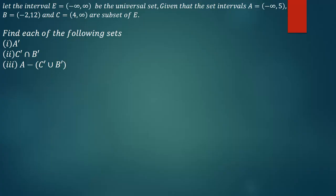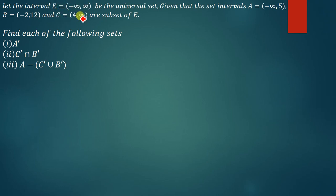We've been given that the universal set is the set of real numbers, which is just from negative infinity to positive infinity. Then we also have subsets A, B, and C.